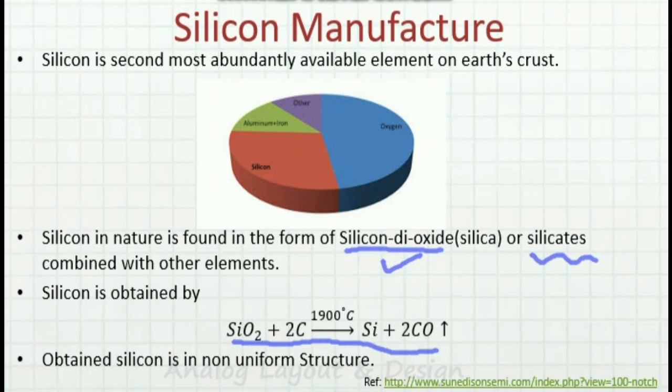When carbon is reacted with silicon dioxide at 1900 degrees centigrade, we get silicon and also carbon monoxide. This silicon obtained is not a uniform structure, so we need to understand what that structure means.